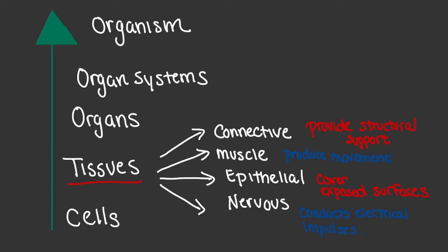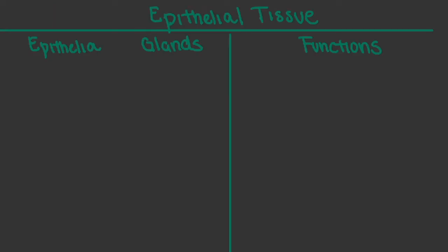With our connective, muscle, epithelial, and nervous tissue, we'll soon learn that one is not necessarily more important than the other. With epithelial tissue, perhaps the first thing we need to do is define the word epithelial. When you hear this word, it simply refers to a combination or layers of cells, and these layers of cells cover either internal or external structures.